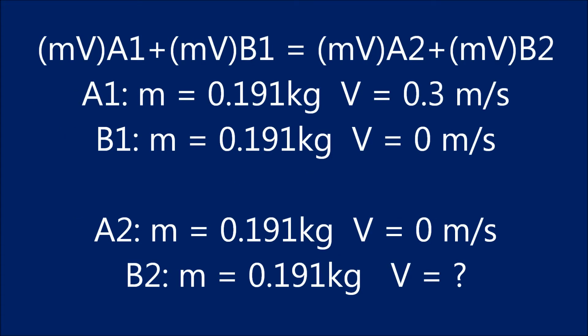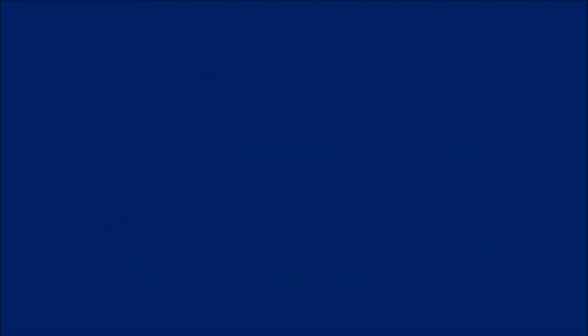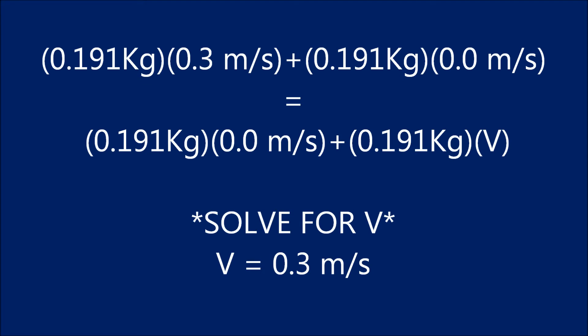Once plugging in all the information we know and then ignoring all the friction that is on the pool table, we can then rearrange the formula and solve for V on the eight ball. The outcome would be 0.3 meters per second. This is because no momentum is lost during an elastic collision.